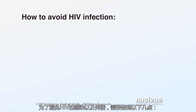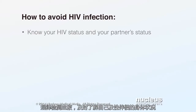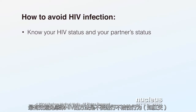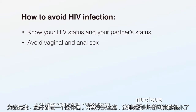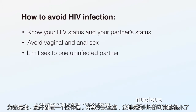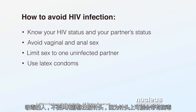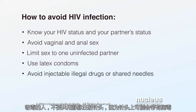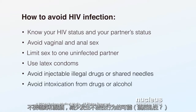To avoid getting or spreading an HIV infection, know your HIV status and your partner's status by getting tested regularly. The most effective way to prevent HIV infection is to avoid vaginal and anal sex. When engaging in sexual activity, you will be less likely to contract HIV if you only have sex with one uninfected partner or use latex condoms for protection. Avoid using injectable illegal drugs or sharing drug needles, and avoid intoxication from drugs or alcohol, as it may lead to unsafe sexual behavior.